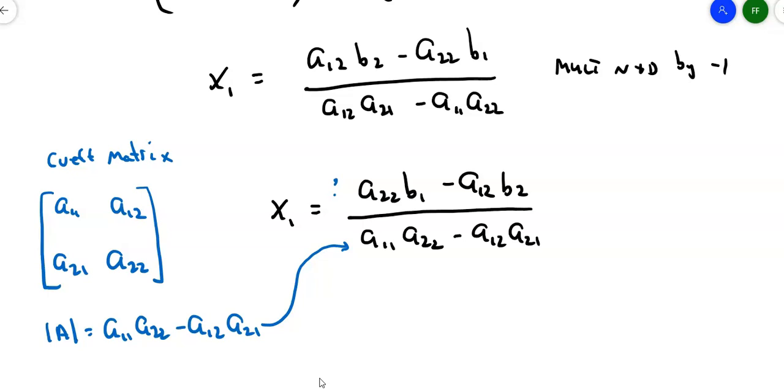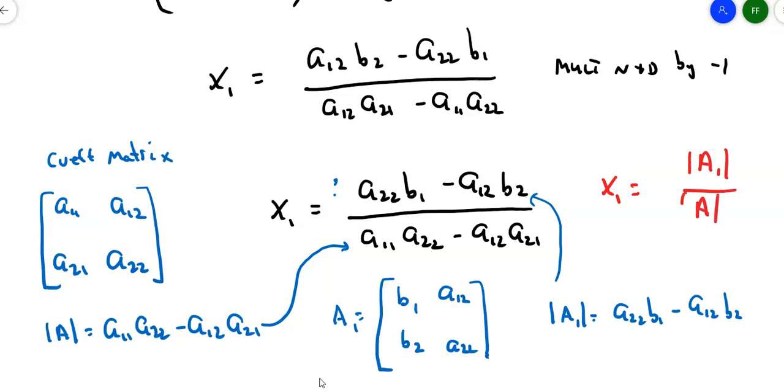But what is this thing on top? Well, suppose I took a matrix, that coefficient matrix, and I replaced the first column with b1b2, and I kept the second column as a12a22. Now, isn't the determinant of this matrix, I don't know, let's call it a sub 1. Isn't the determinant of matrix A sub 1, a22b1 minus a12b2? Ah, that's the top over here. So it turns out that x sub 1 is equal to the determinant of matrix A sub 1 divided by the determinant of matrix A, where I form this matrix A sub 1 by knocking out the first column and replacing them with the b1b2.